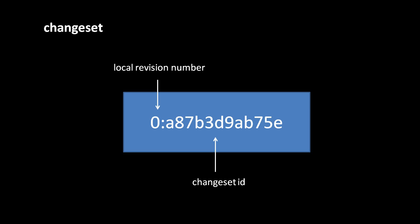Local revision numbers are assigned to change sets in the order they are added to the repository, starting from 0. These numbers only uniquely identify a change set within that repository. By convention in Mercurial, the local revision number and the change set ID are displayed with the local revision number first, followed by a colon, then the 12-digit short form of the change set ID.